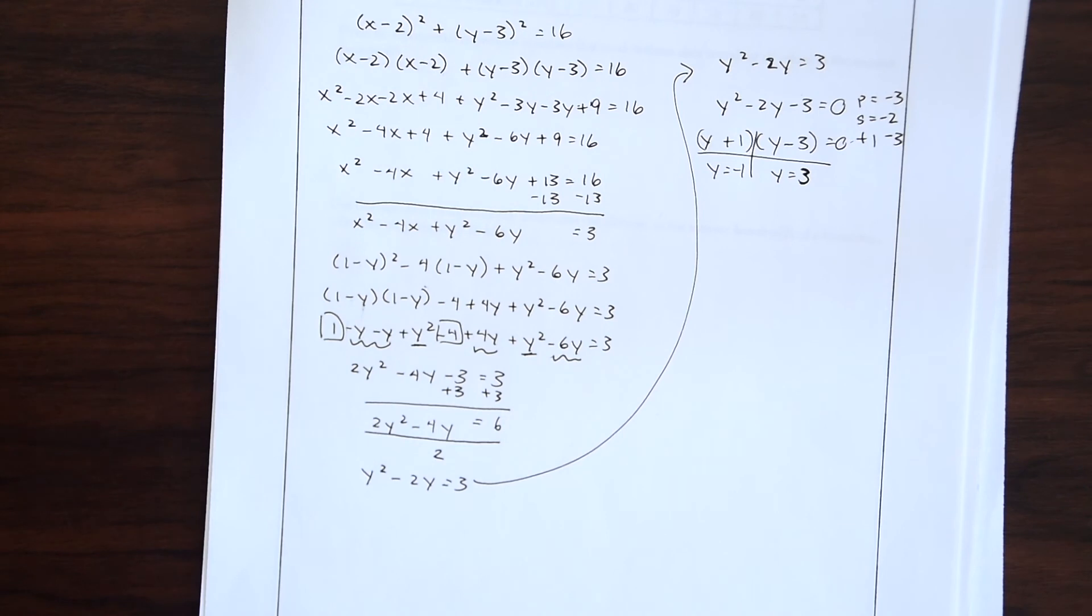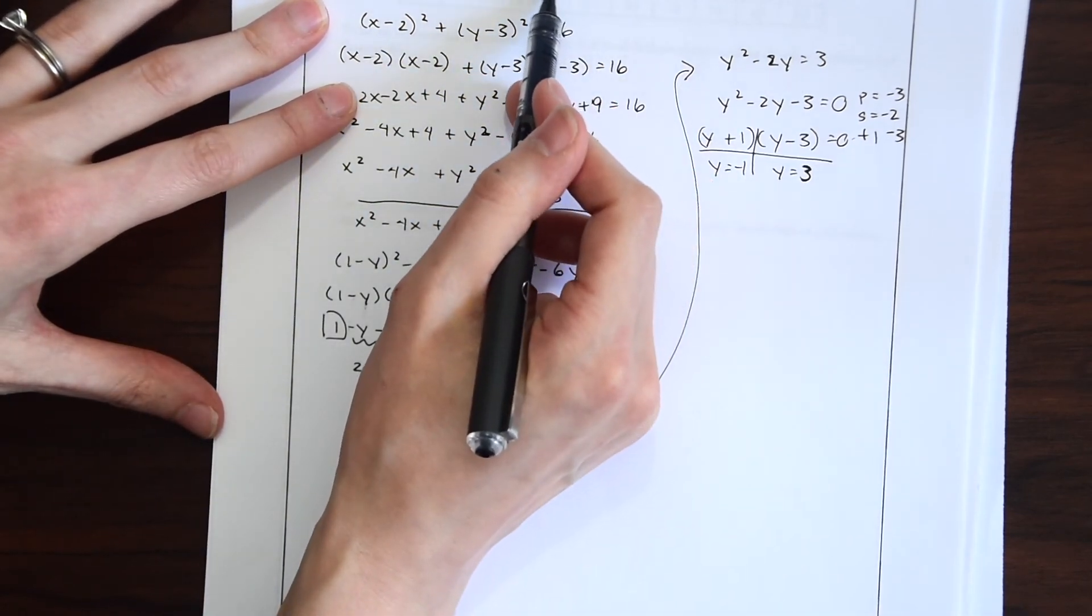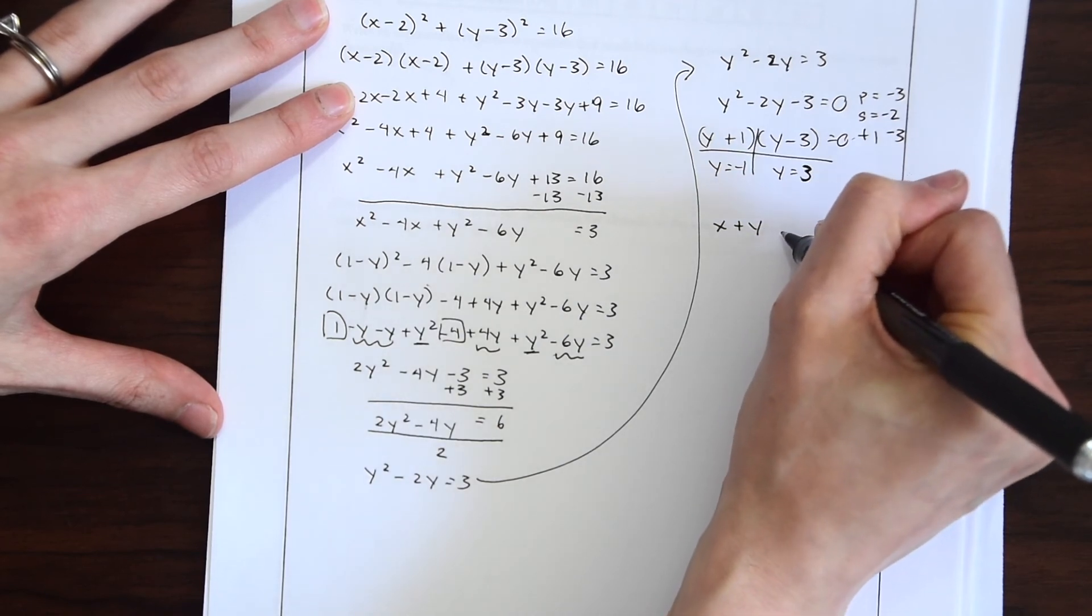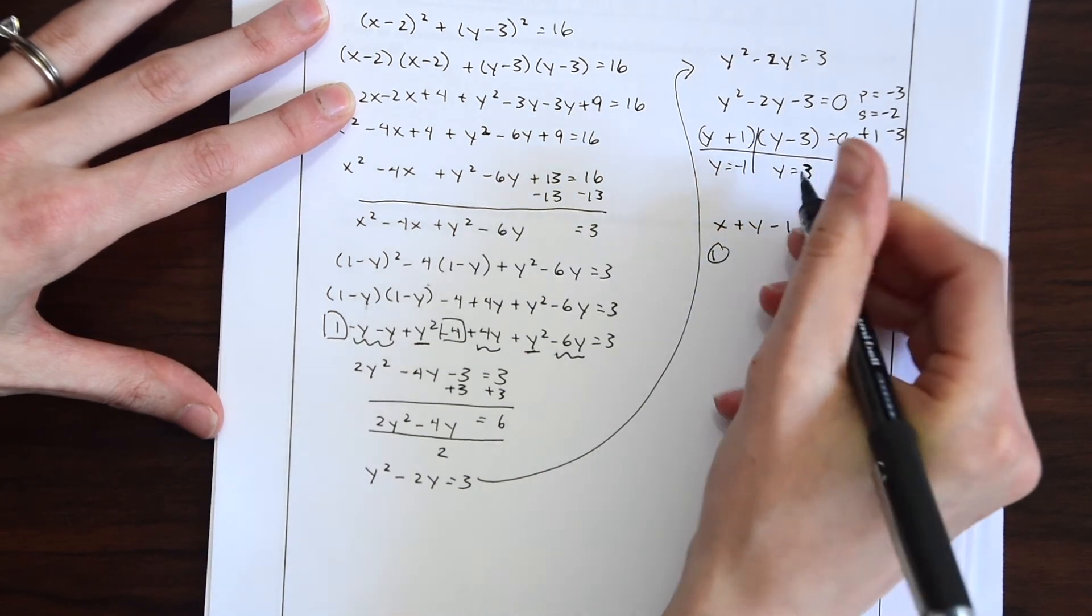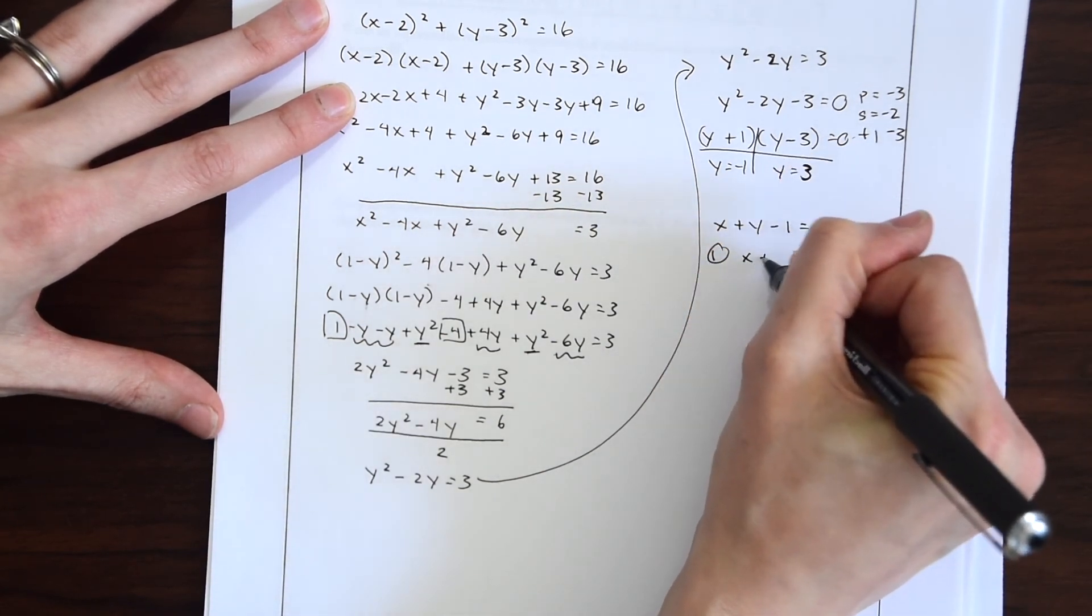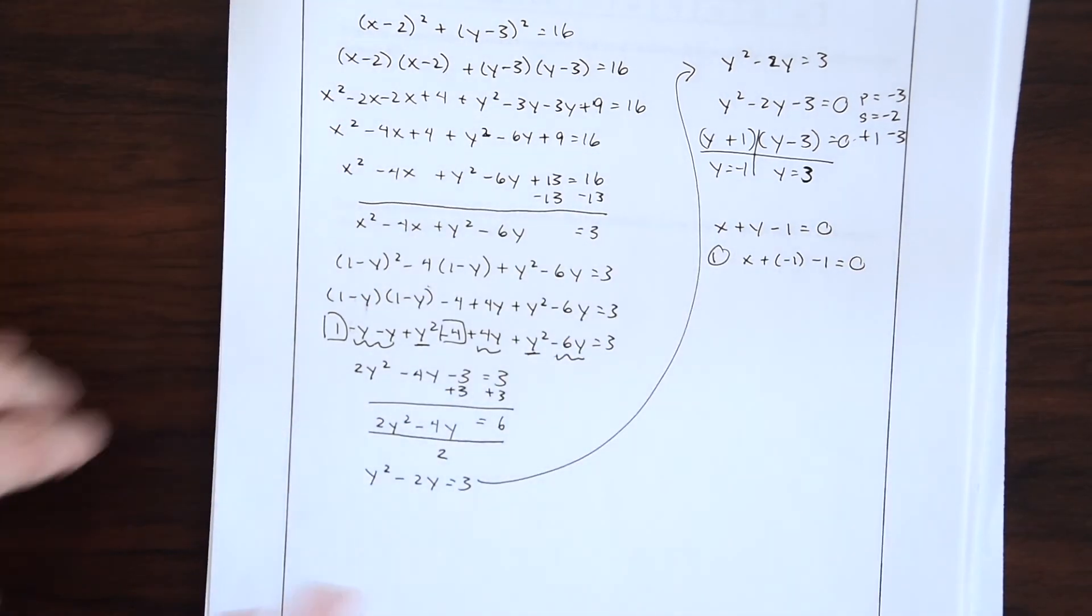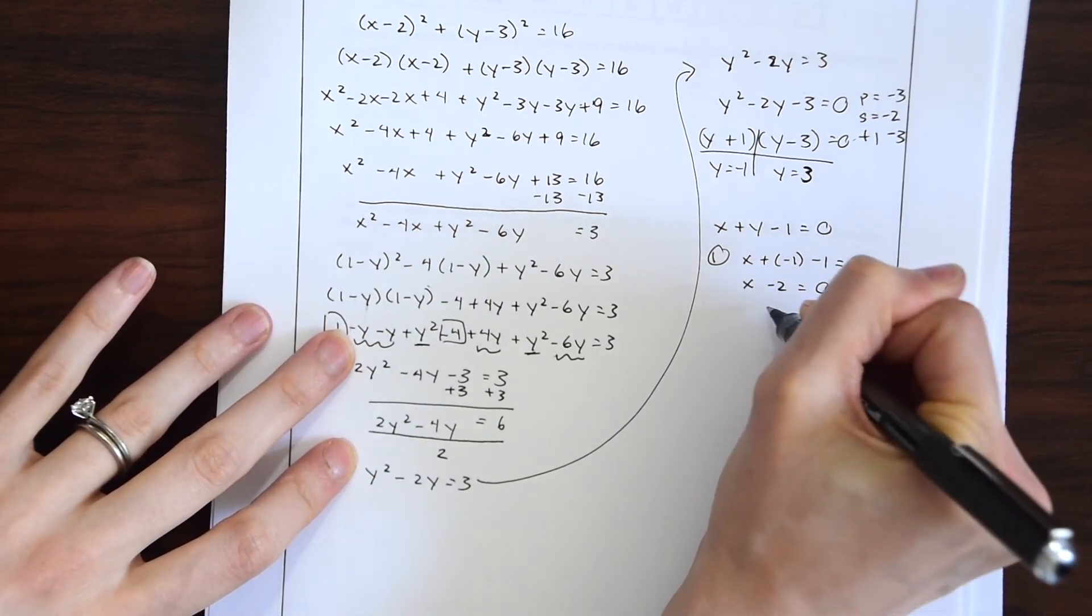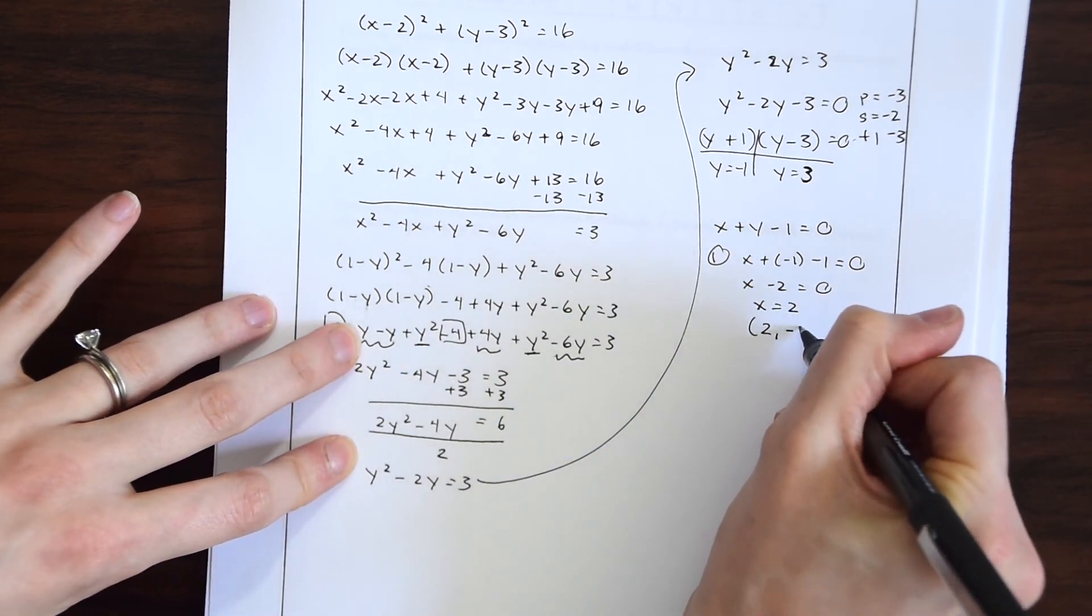So we have our two y values but we also need to find the corresponding x values. And to do that we could use either equation but let's use this smaller one because that just looks a lot easier. So we're going to plug these into x plus y minus 1 equals 0. So for our first equation we're going to be plugging in minus 1. So x plus minus 1 minus 1 is equal to 0. So this really becomes x minus 2 equals 0. So we know that x is equal to 2. So one pair is going to be 2 comma negative 1.